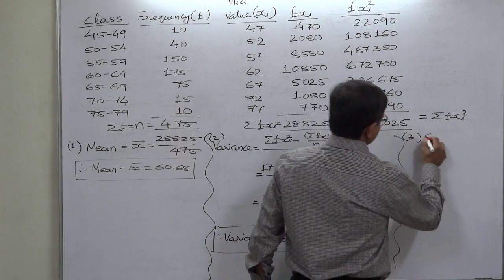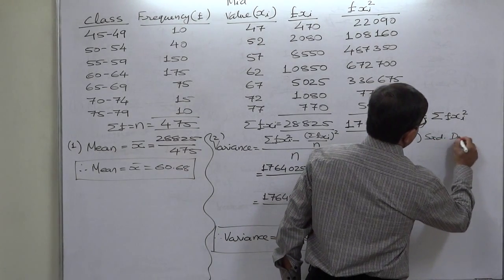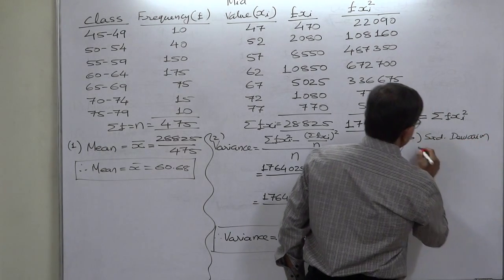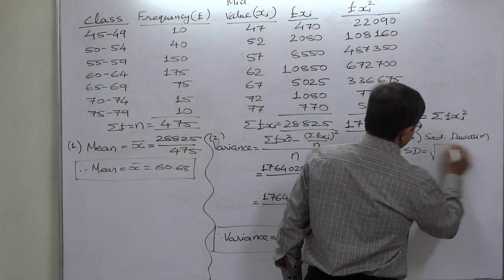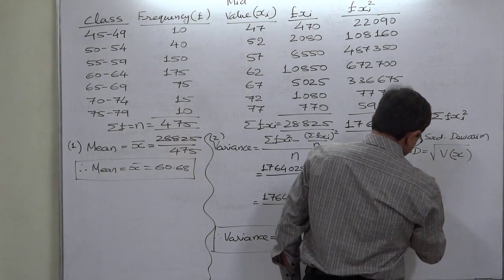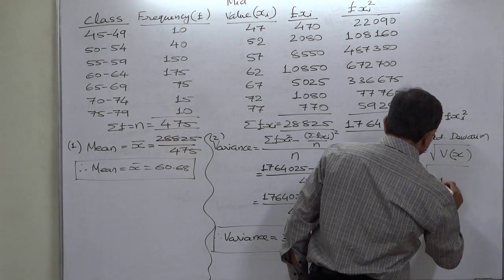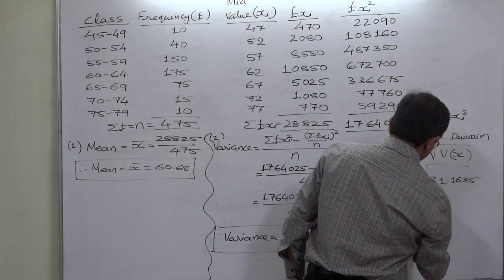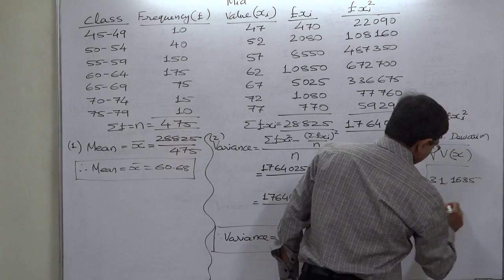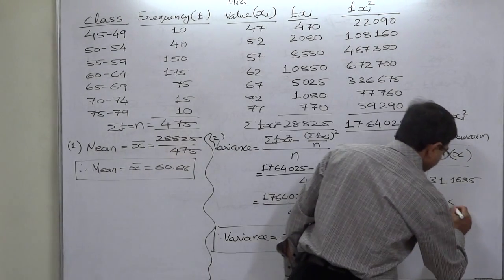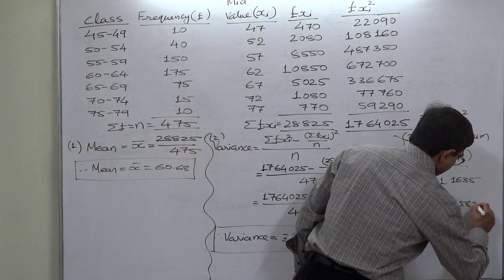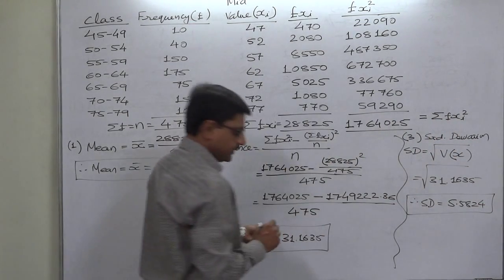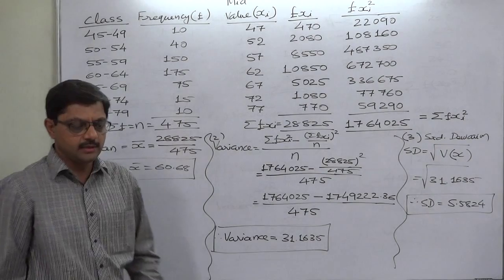Standard deviation s, that is nothing but positive square root of variance, that means positive square root of 31.1635. So the standard deviation of this particular data is 5.5824. It is the standard deviation. Got it? Thank you.